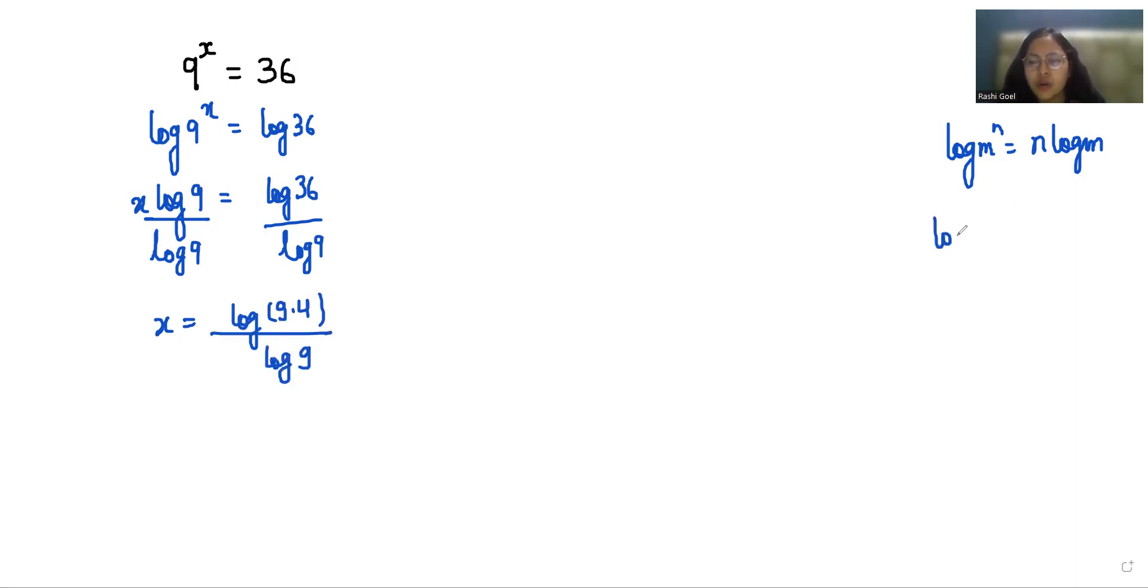According to the log rule, log(a × b) can be written as log a plus log b. So x equals (log 9 + log 4) over log 9.